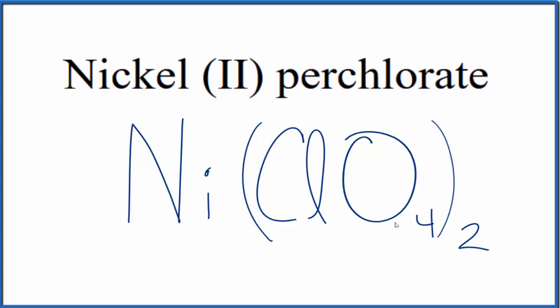If you were given the formula and asked to write the name, you'd know that since each perchlorate has a 1- charge, the nickel would have to be 2+, so you'd write nickel(II) to show that 2+ charge.